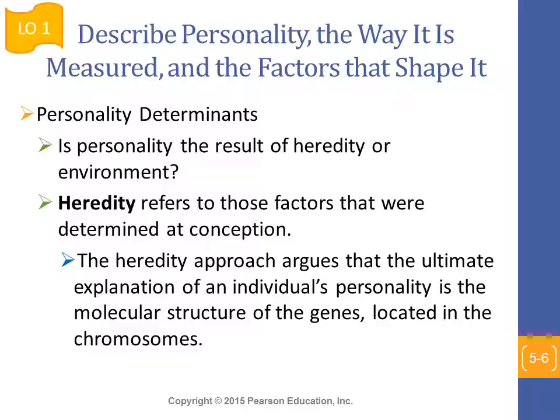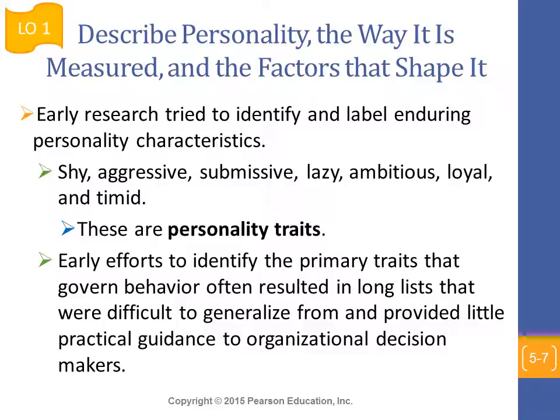This factor is heredity. The heredity approach, according to the book, argues that the ultimate explanation of an individual's personality is the molecular structure of the genes located in the chromosomes. The book talks about several examples where researchers examined identical twins separated right after birth, growing up in two different households and two different socioeconomic conditions, but ending up choosing more or less similar things. This shows there can be a lot of influence based on genes and other biological factors.